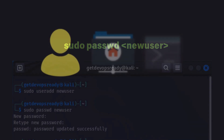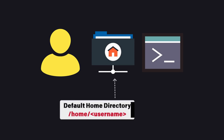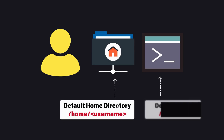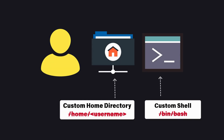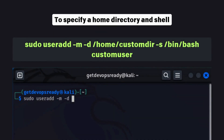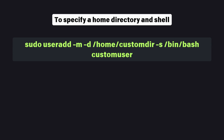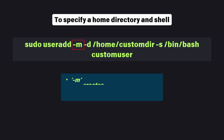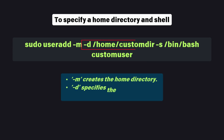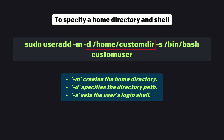By default, this creates a user with a home directory and the default shell. But if you want to customize these settings, you can specify a home directory and shell using flags with the useradd command. Here, -m creates the home directory, -d specifies the directory path, and -s sets the user's login shell.